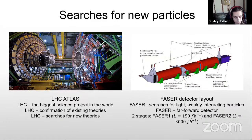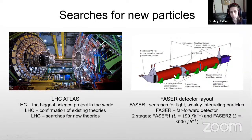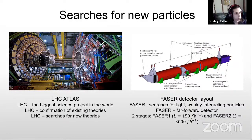FASER is a far-forward detector placed almost 500 meters from the ATLAS interaction point. As you can see in this picture, it consists of many layers designed to veto background particles. In fact, at this experiment background levels are almost negligible. Then we have a decay volume, a spectrometer and calorimeter which allow us to detect standard model particles. There will be two stages: FASER 1 at LHC run 3, and FASER 2 at the High-Luminosity LHC, which is a bigger version with a larger decay volume.